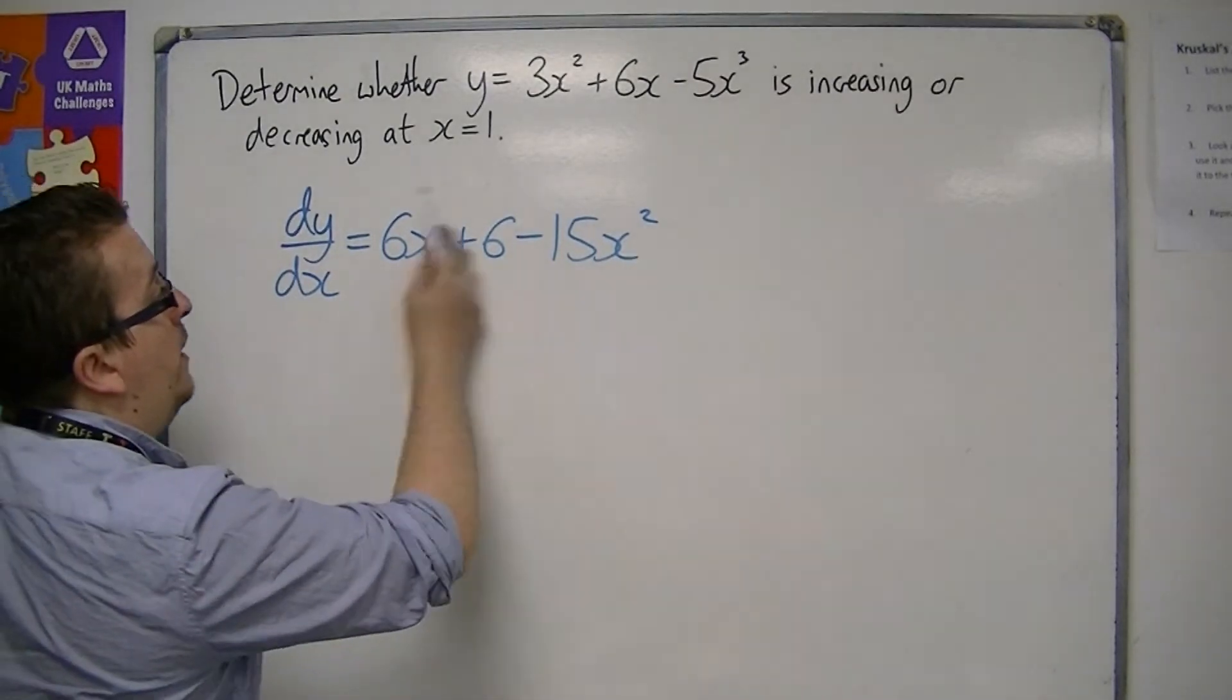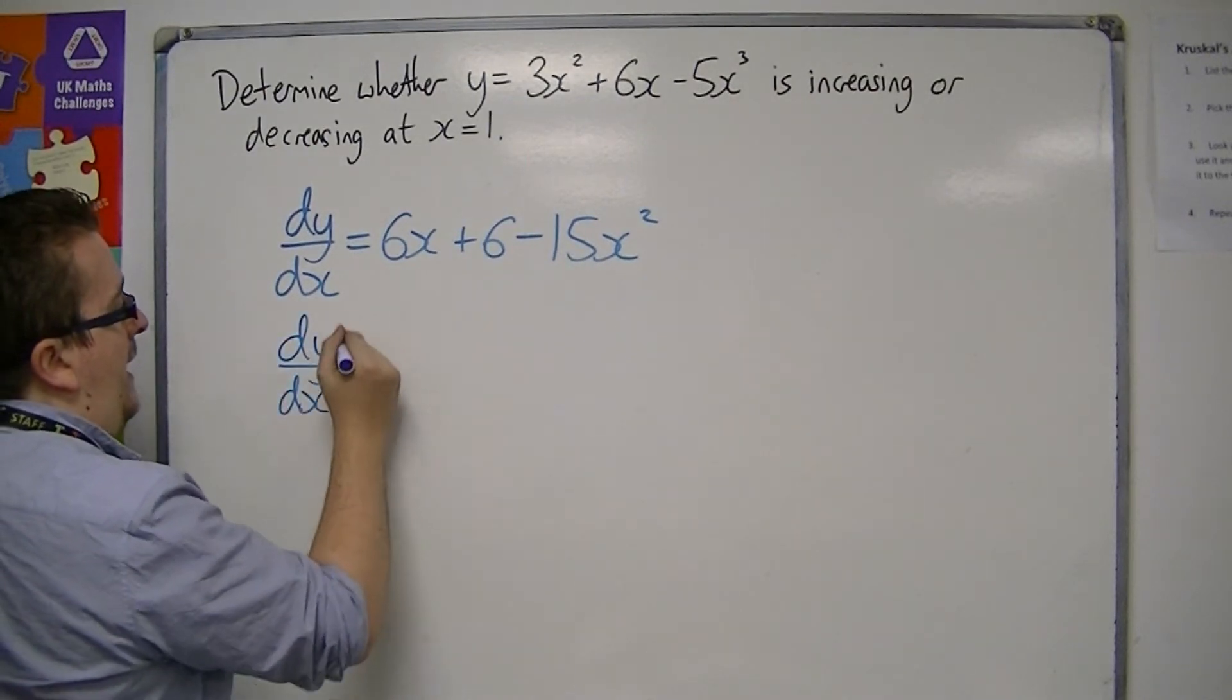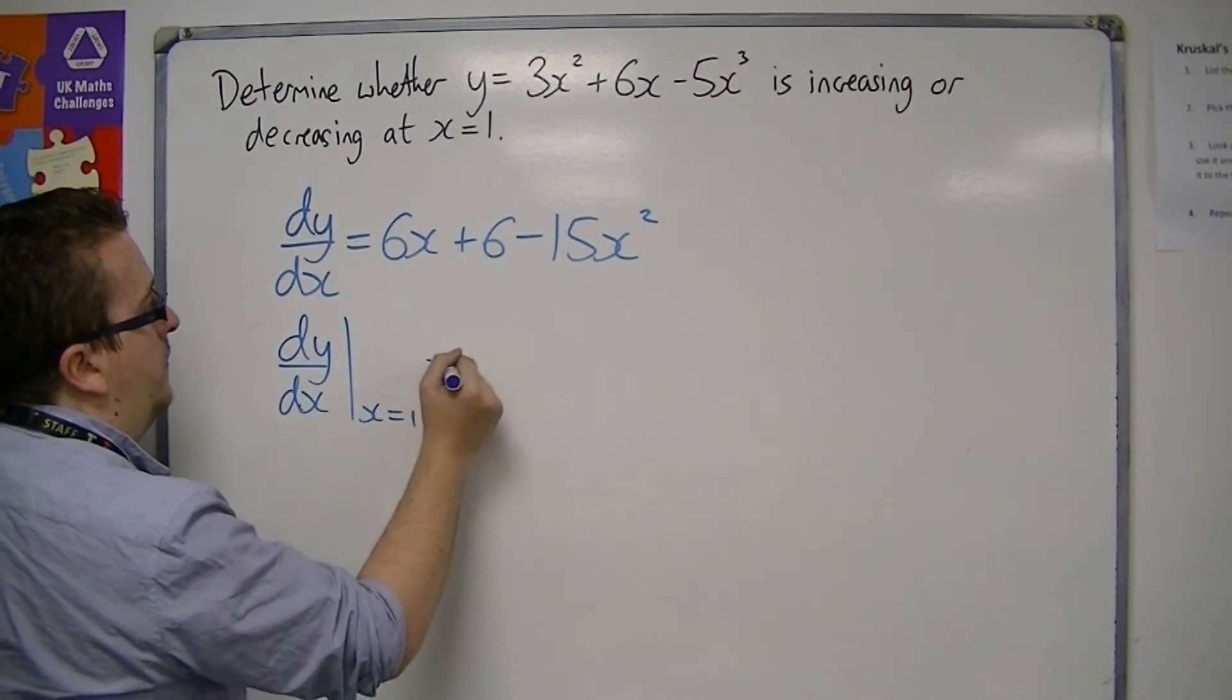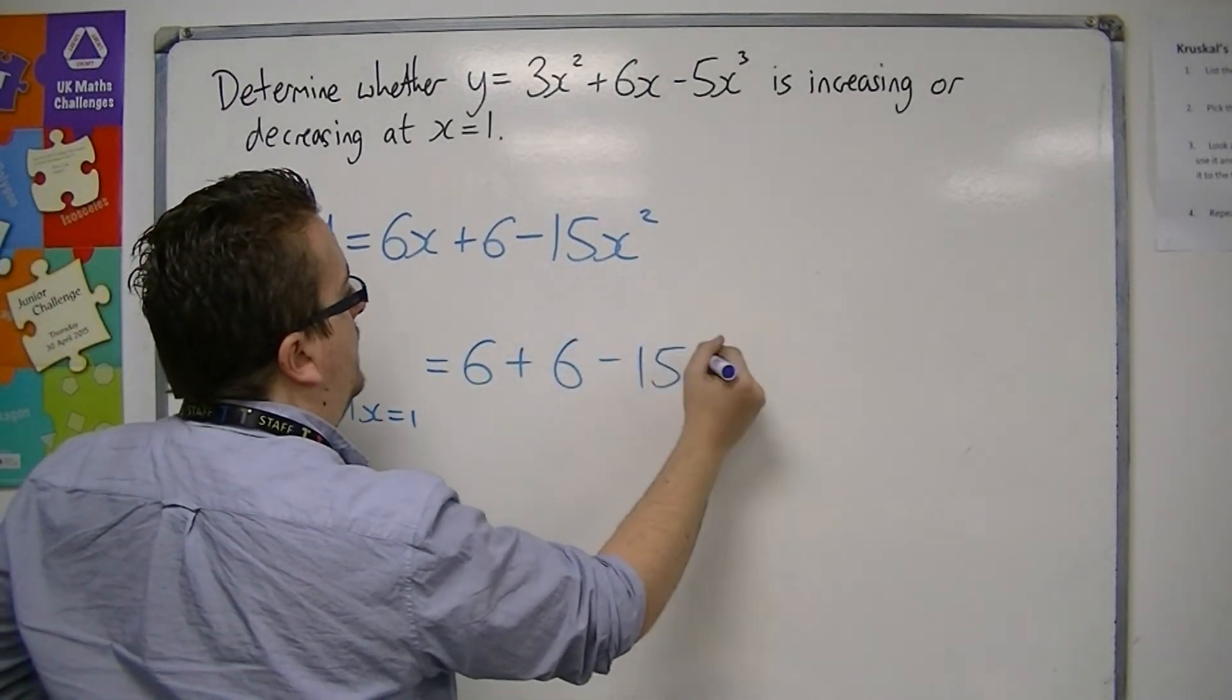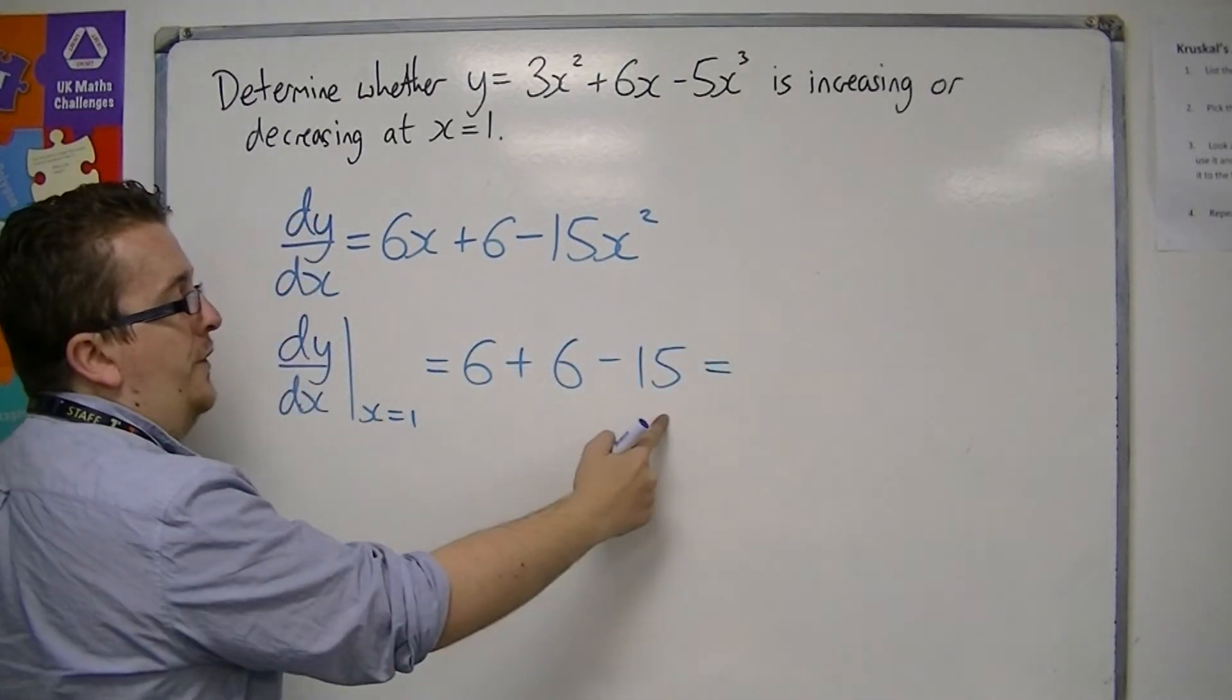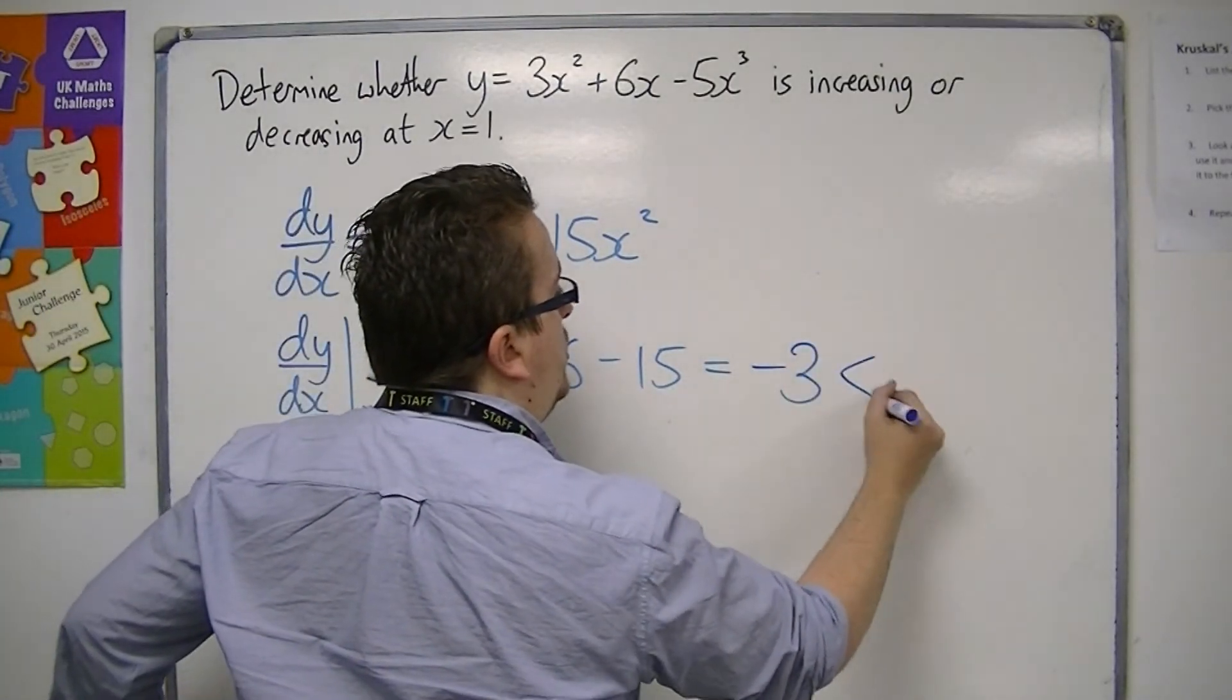So that is the gradient function. I evaluate it at x is 1, and I get 6 plus 6, take away 15. So that's 12 take away 15, which is minus 3, which is negative.